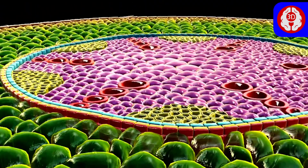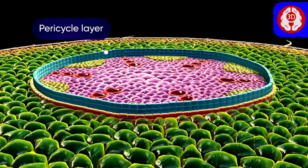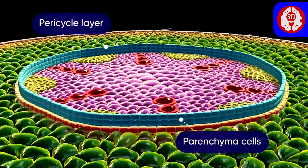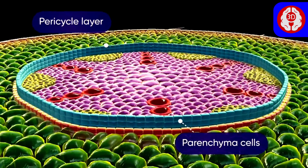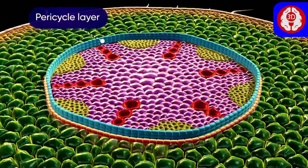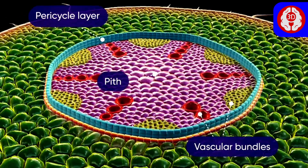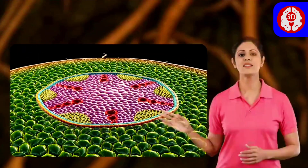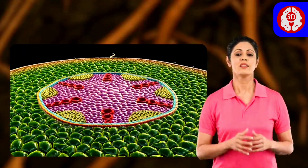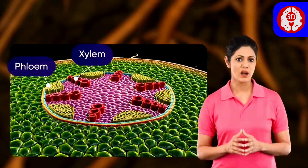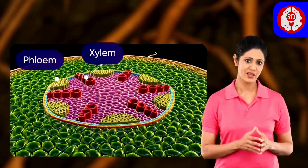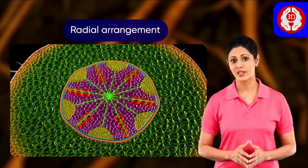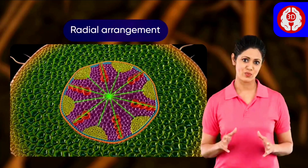The endodermis is followed by the pericycle layer, which consists of thin-walled parenchyma cells. Pericycle encloses the central pith in which the vascular bundles are embedded. Inside the vascular bundle, the xylem and the phloem are arranged alternately on different radii. This condition is called a radial arrangement.